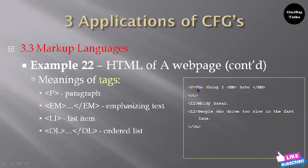A paragraph tag is written like this: 'The thing I' — em tag — 'hate' — em tag close. And that em tag has been written. And the order list is there, within the order list like this, and the list item is there. So all of these have been printed on the screen. So this is the meaning of this HTML source code.